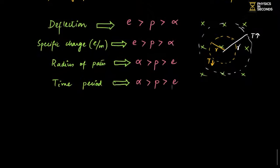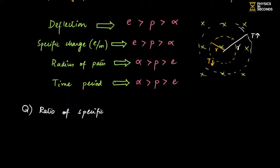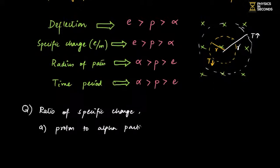Now let's do ratio-based questions. Find the ratio of Specific Charge (Charge to Mass Ratio): first, proton to alpha particle; second, proton to electron. Calculate quickly and give the answers.